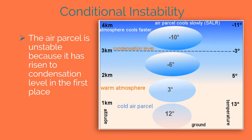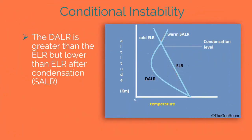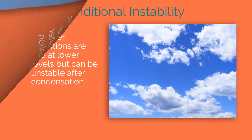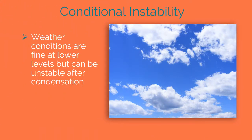The air is unstable because it has risen to condensation level in the first place. The dry adiabatic lapse rate is greater than the environmental lapse rate, but lower than the environmental lapse rate after condensation. Weather conditions are fine at lower levels but can be unstable after condensation.